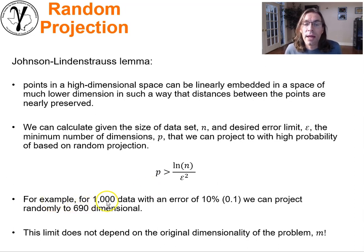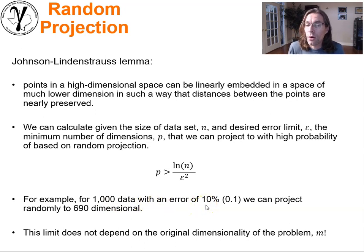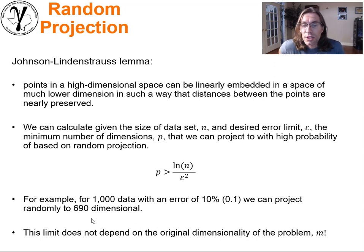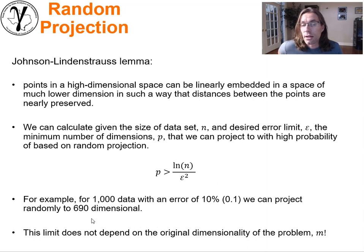To put some numbers in here: if we had 1000 data points and we were okay with about 10% error in the pairwise distances, we could project randomly to about 690 features or dimensions. What should really blow your mind is that this result does not depend on the original dimensionality of the problem M. It only depends on the number of sample data available and on the required error level that you're willing to live with.